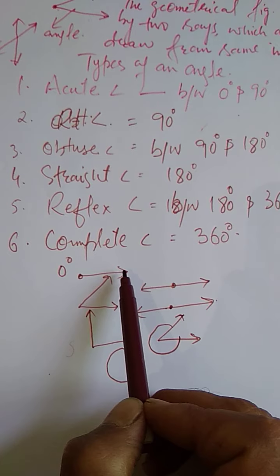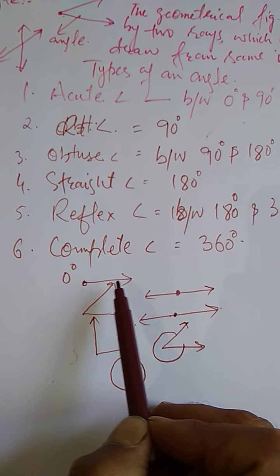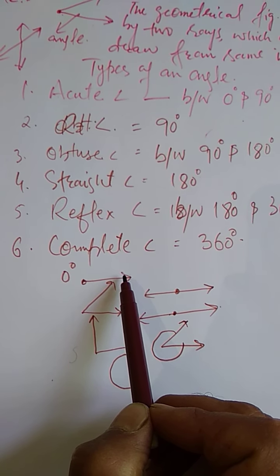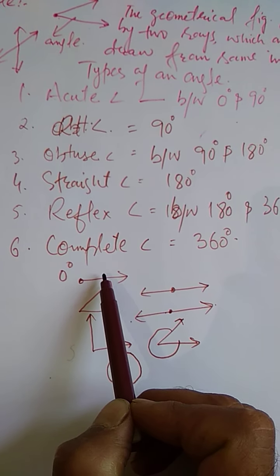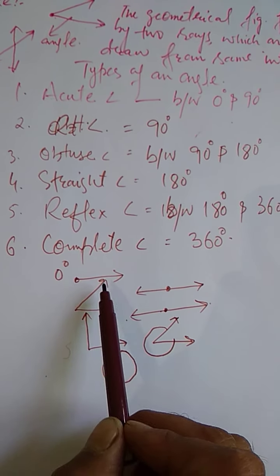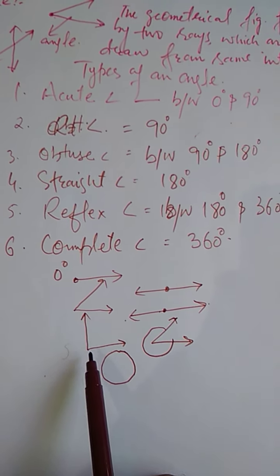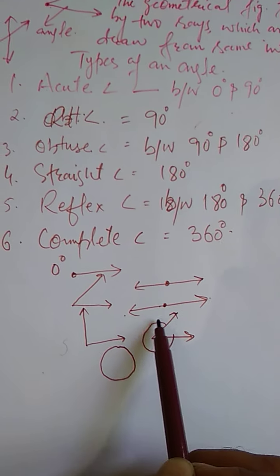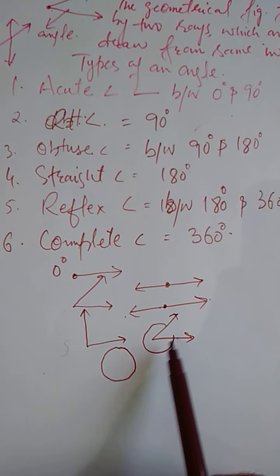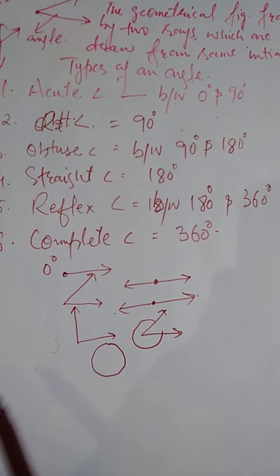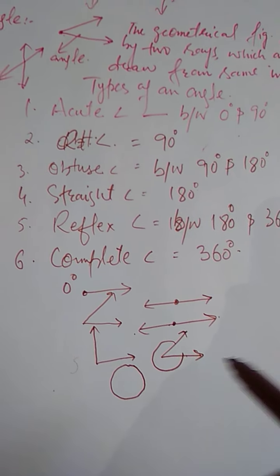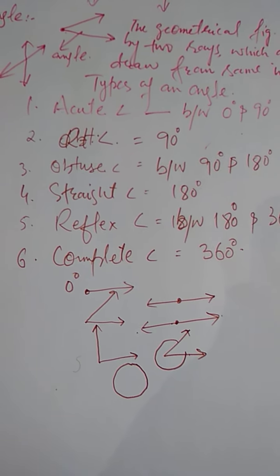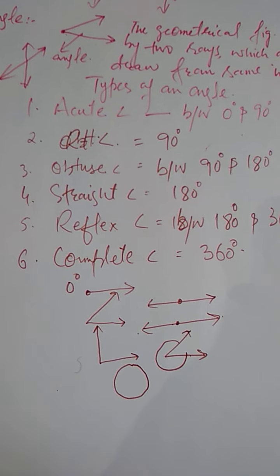Now for representation: if you see a ray and someone asks if it represents any angle, you say yes — it is a 0 degree angle. Then this is the acute angle, this is the right angle, this is the straight angle, this is the reflex angle, and this is the complete angle. This is all about an angle and its types.